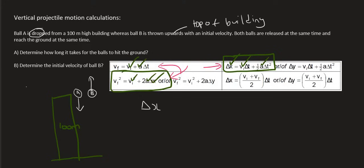So we're going to have ΔX equals Vi·Δt plus 1/2·a·Δt². I'm going to choose downwards as positive, and remember I'm doing this for ball A. So we know that the displacement is going to be 100, and I say positive because I chose down as positive.